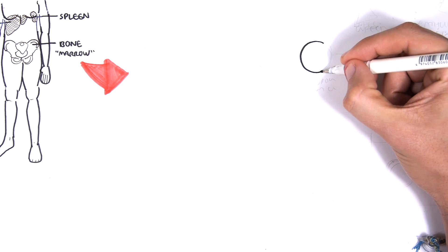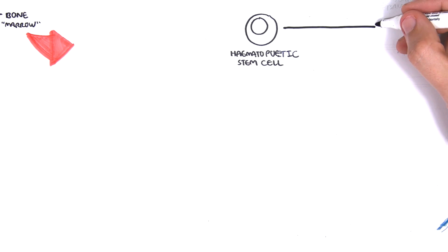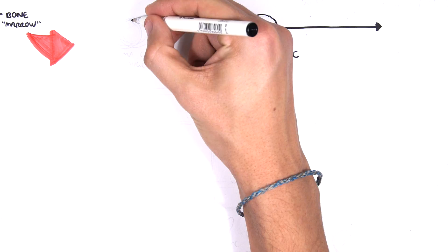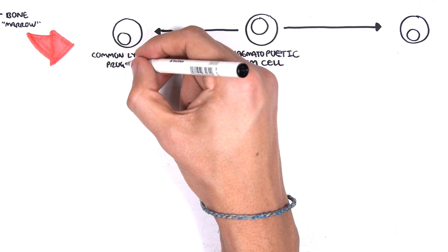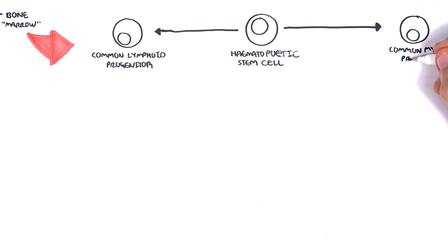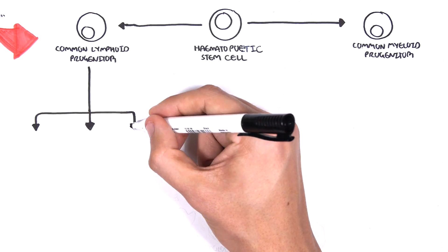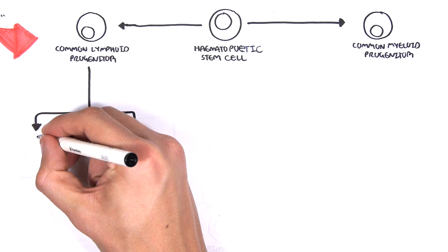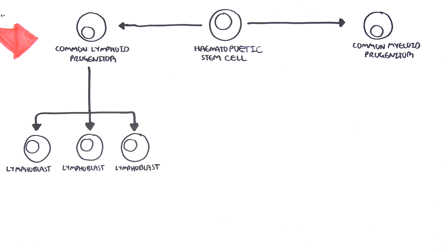Let's begin by zooming into the bone marrow. In the bone marrow, we can find hematopoietic stem cells. Hematopoietic stem cells can differentiate into either a common lymphoid progenitor cell or a common myeloid progenitor cell. The common lymphoid progenitor cell then further differentiates into different lymphoblasts with different genetic profiles, allowing them to form and mature into different types of lymphocytes.